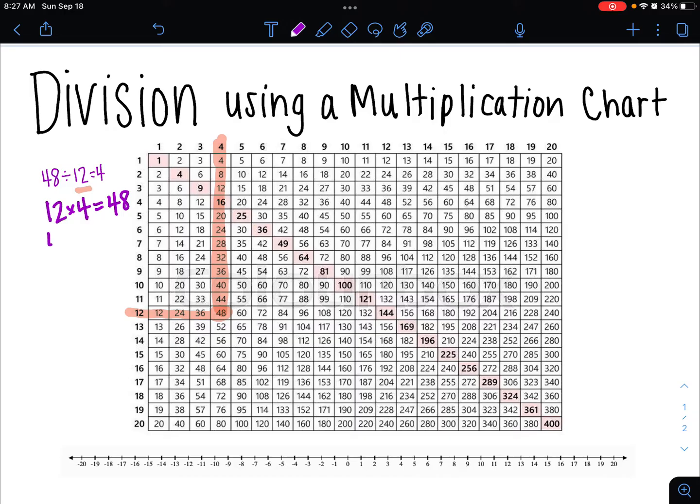We can also say that 48 divided by 4 is 12, and we can do that by looking at 4 until we get to 48. There it is, right above it is 12. So multiplication is like that inverse operation.